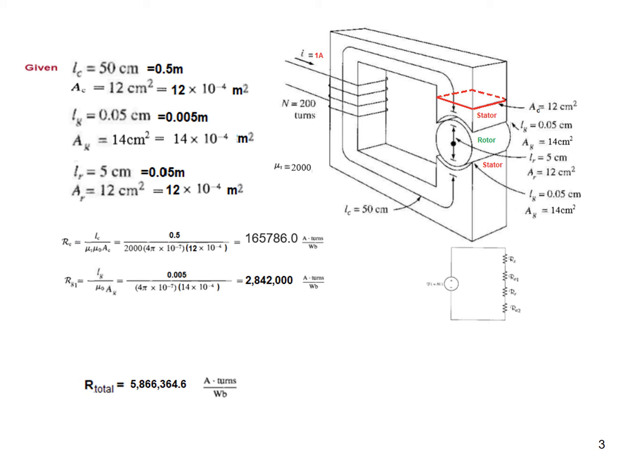Now for the air gap, the formula is slightly changed because the permeability is μ₀ and there is no metal involved, so μr is not required. The Lg is 0.005 meters, μ₀ is 4π × 10⁻⁷, and area of cross-section from here is 14 × 10⁻⁴. Solving this we get 2,842,000 ampere turns per weber.